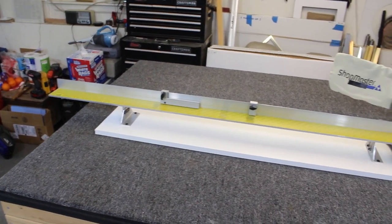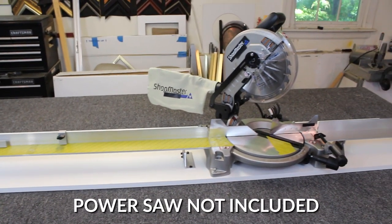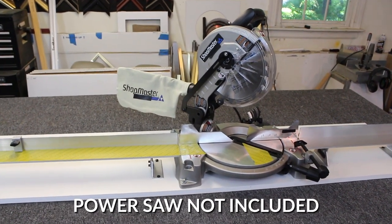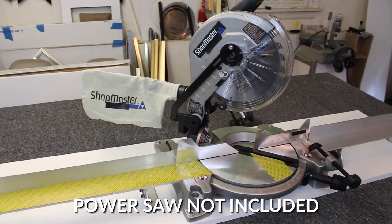This is the Logan F100-5 Saw Fence Kit. The kit includes fences and hardware to adapt your own personal miter saw into a picture frame mold and cutoff saw.